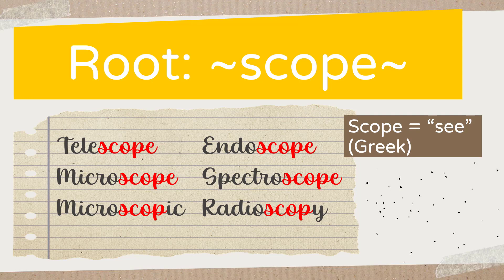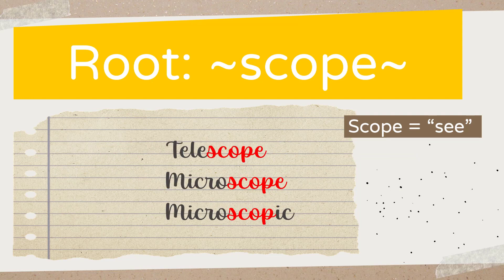If I break that down, when we're looking at 'telescope,' the 'tele' is actually a root. So this word has two roots — it doesn't have a prefix or a suffix. 'Tele' — you can think of telephone or teleport — basically means 'far.' So therefore, 'telescope' means seeing far. And if you think about what a telescope does, it allows you to see something far away.